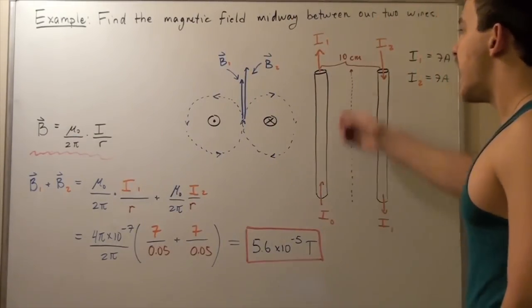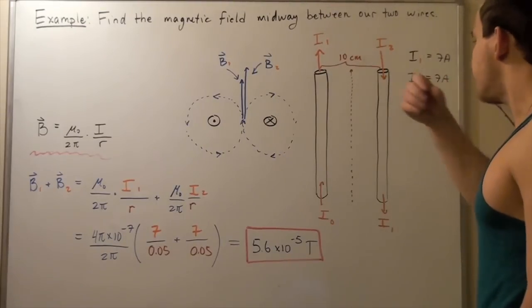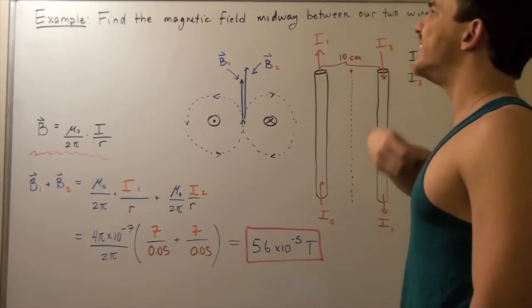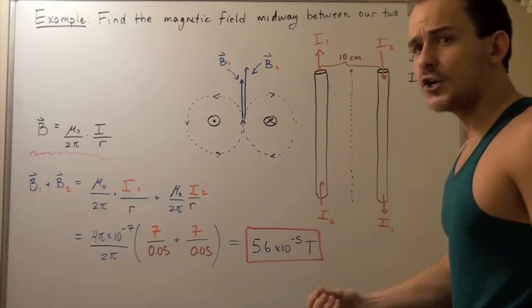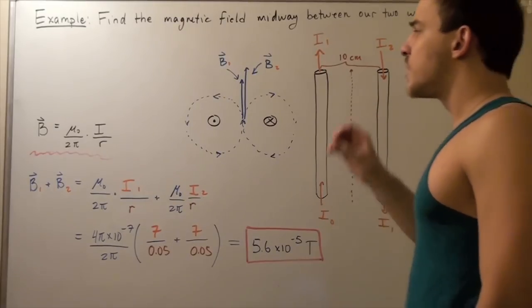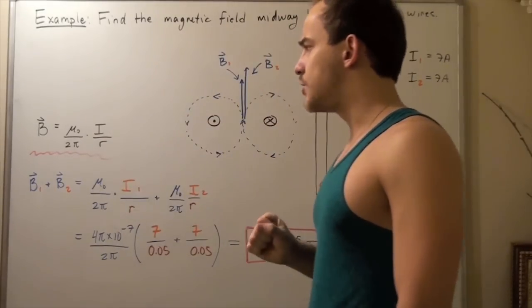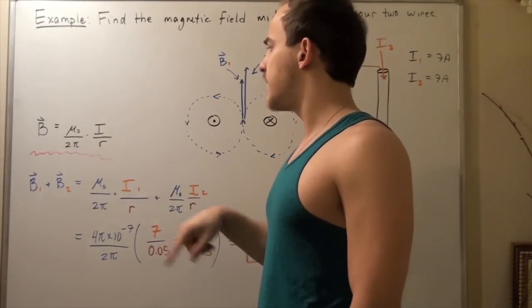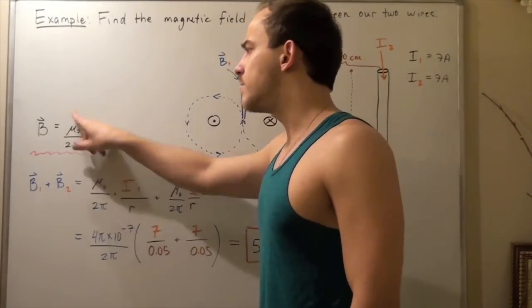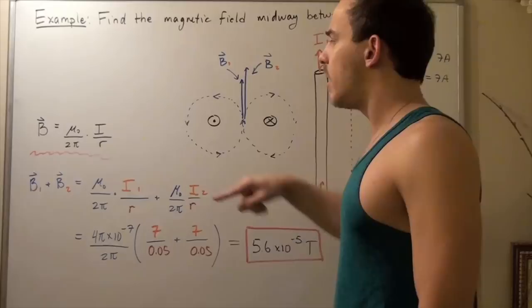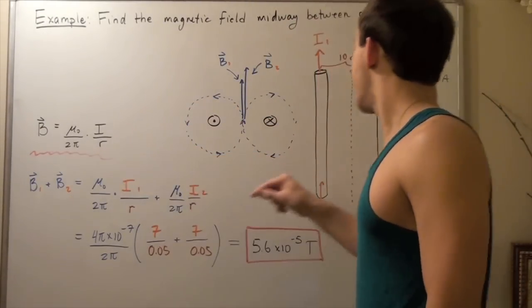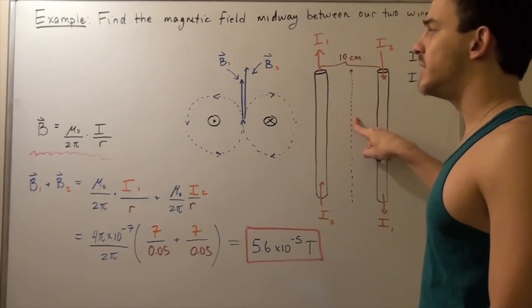So whenever we have a very long wire and we want to find the magnetic field produced by the current flowing in that wire, we use this equation. So the magnetic field is equal to permeability of free space divided by two pi, so this is simply a constant multiplied by the current flowing through our wire divided by the distance at which we're trying to find our magnetic field.